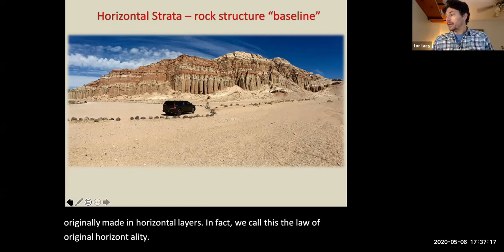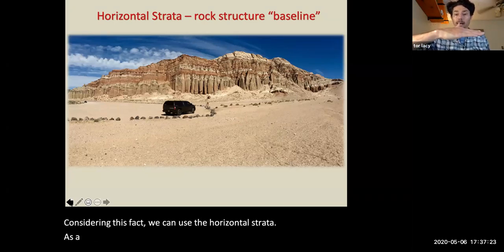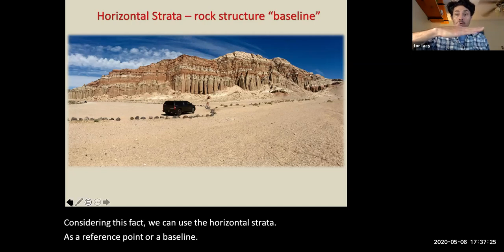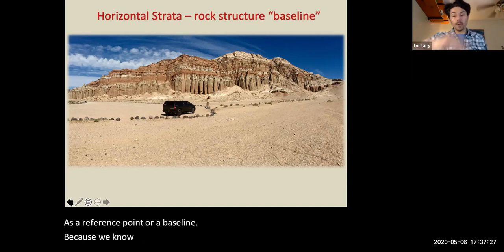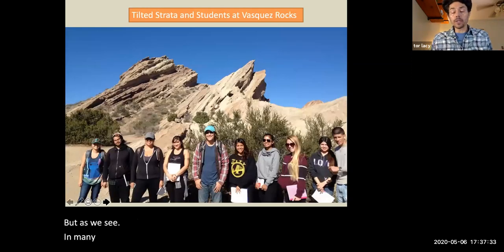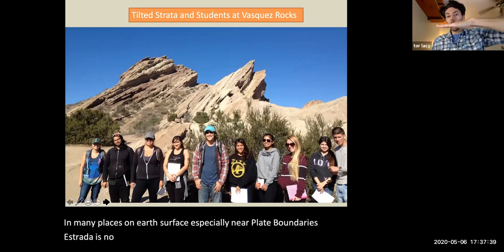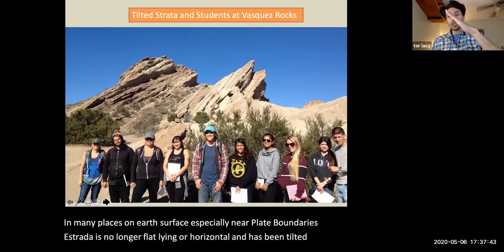Considering this fact, we can use the horizontal strata as a reference point or a baseline, because we know it should be flat to begin with. But as we see in many places on Earth's surface, especially near plate boundaries, the strata is no longer flat line or horizontal. It has been tilted or bent into geologic structures.